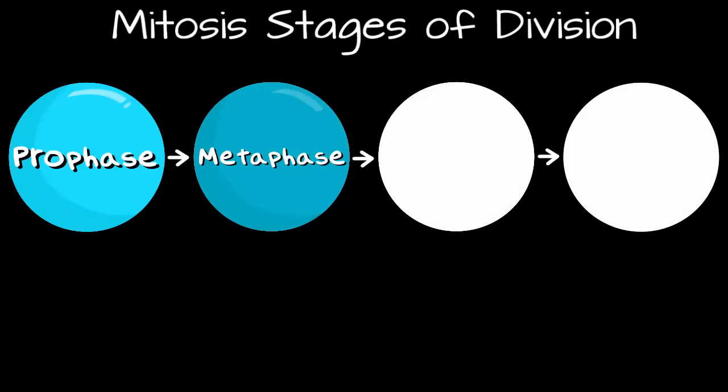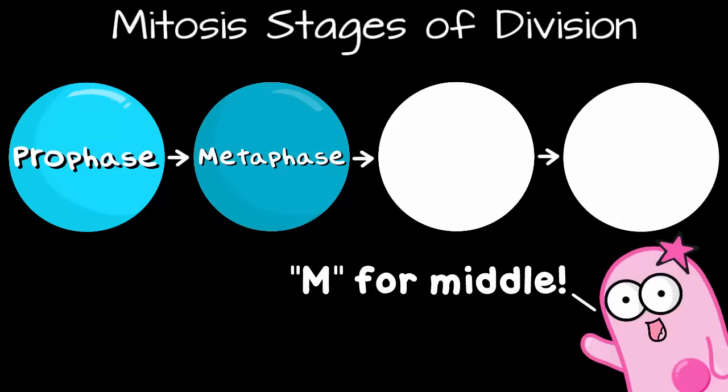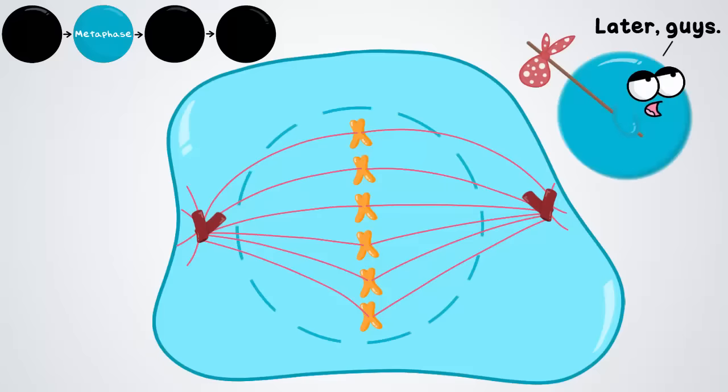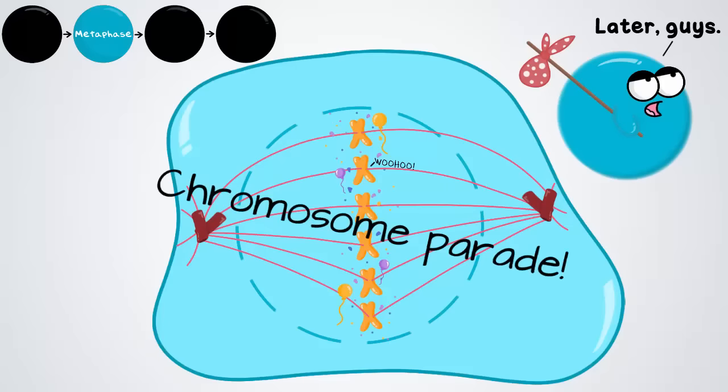The next stage is metaphase. M for metaphase, but I also like to remember M for middle, because in this stage, the chromosomes line up in the middle of the cell. The nucleus has been disassembled. It's no longer there. So we've got the chromosomes in the middle waiting there.